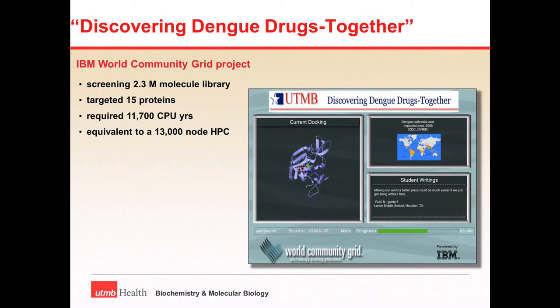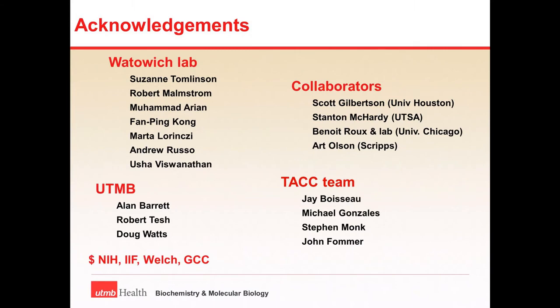We haven't had the time or resources to check whether it will also prevent replication of yellow fever virus or Japanese encephalitis virus. Regarding funding: it comes from several sources — the NIH, the IBM International Foundation, a foundation in Texas called the Welsh Foundation, and a philanthropic organization called the Dund Foundation, which has partnered with what we call the Gulf Coast Consortium. These various funding sources have all graciously supported our research into finding cures for dengue disease.